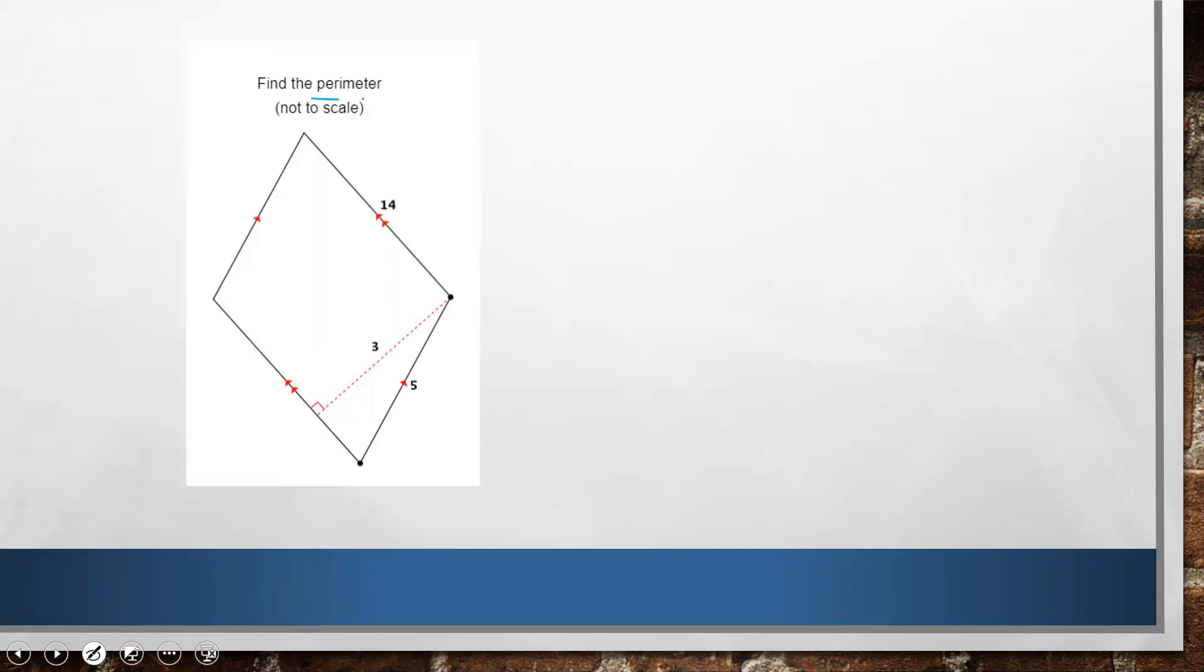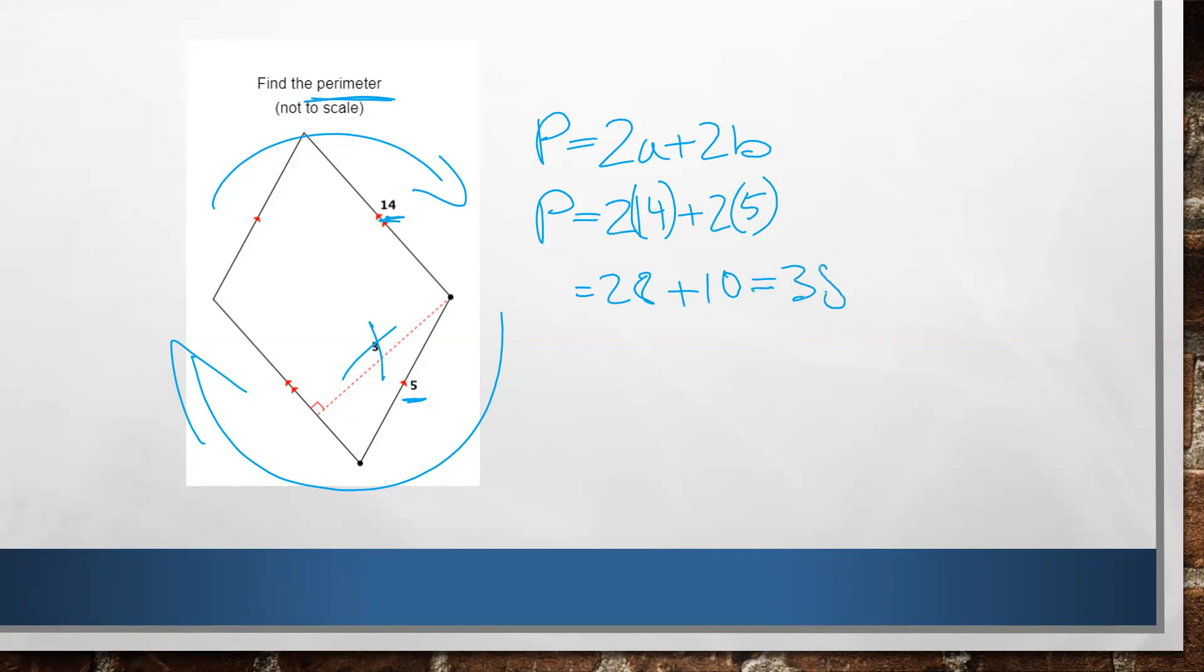It also says find the perimeter. Now perimeter, we want that distance all the way around, which means I don't care about this 3. I just care about the 14 and the 5. So my perimeter, that's the 2a plus 2b formula. So in this case perimeter is 2 times 14 plus 2 times 5, which is 28 plus 10, which is 38.